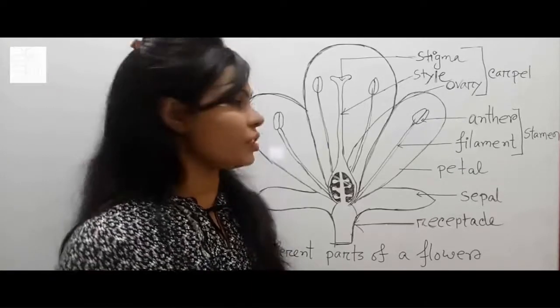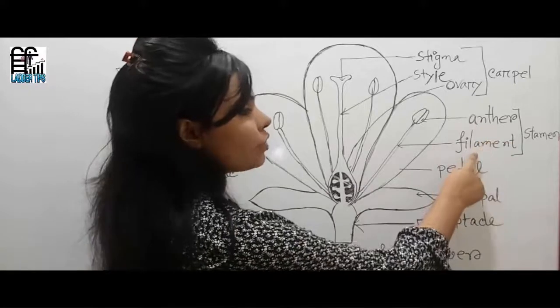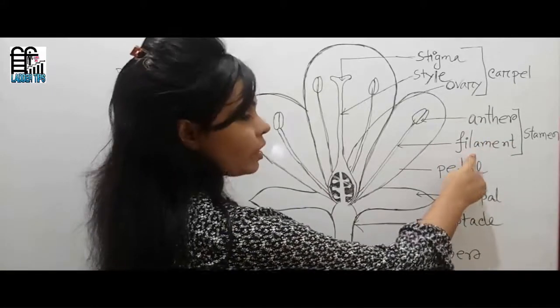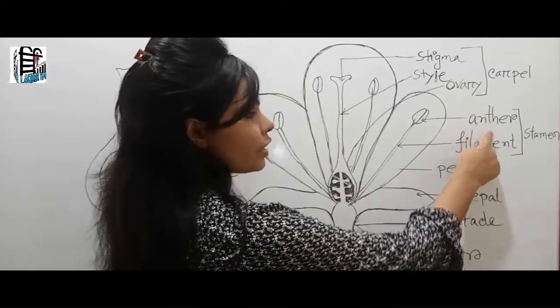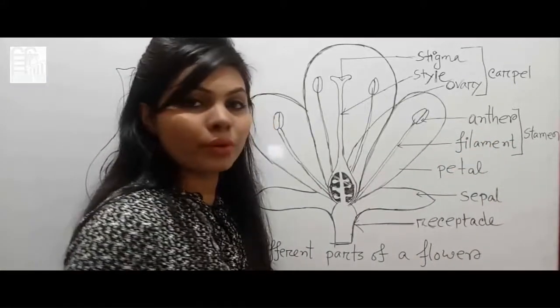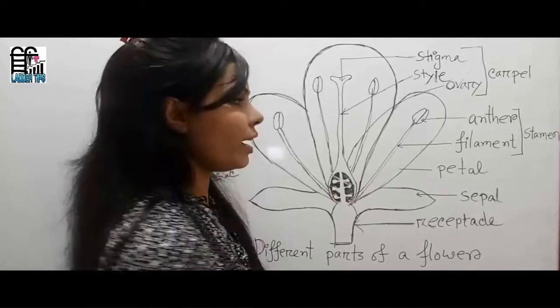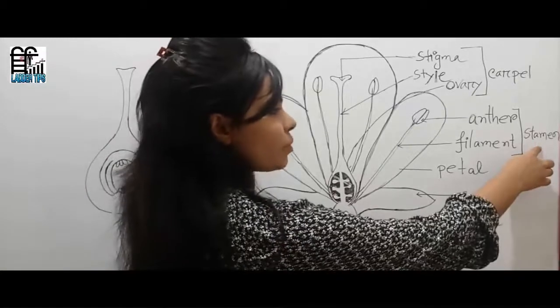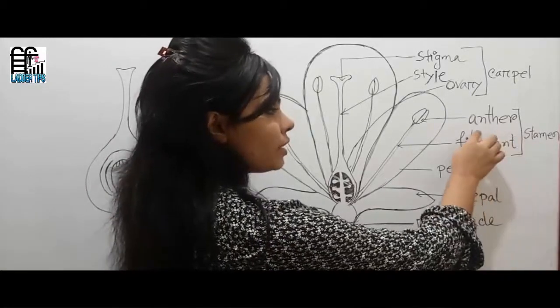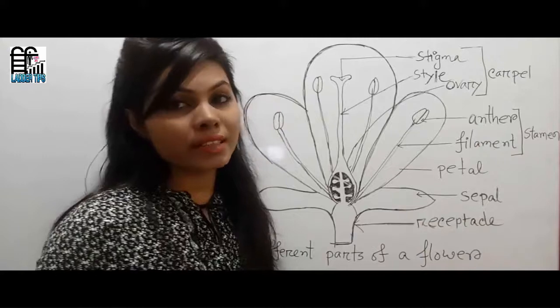Petal is the second whorl of a flower. Petals bring bright color to attract insects for pollination. Then, anther and filament — anther and filament are the main reproductive organs known as the stamen,